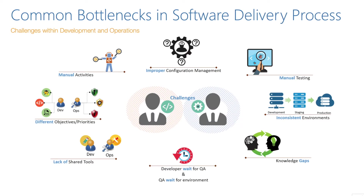That is not all — for example, you might be doing manual testing or manual deployments, there could be knowledge gaps between your ops and dev teams, the developer is waiting for QA or vice versa, the QA is waiting for the environment from the dev team. There can be a lack of shared CI tooling, and different objectives and priorities across dev, ops, and QA teams — all of which can be corrected by DevOps, which is not selling of tools but implementing correct practices.